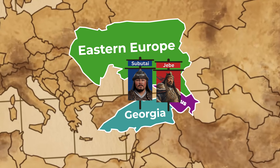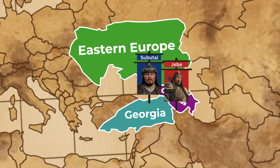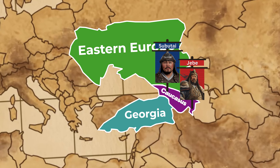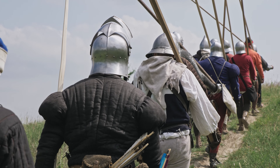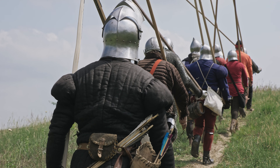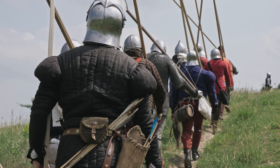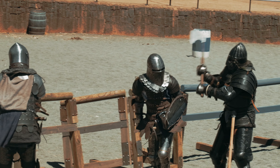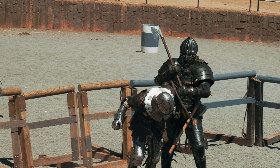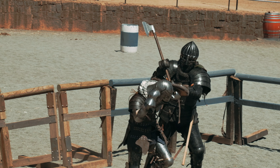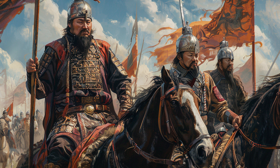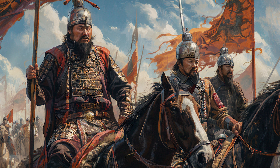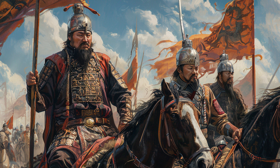Continuing their advance, the Mongols encountered the Alans and the Kipchaks, two prominent nomadic tribes in the Caucasus. Subutai and Jebe forged an alliance with the Kipchaks, temporarily uniting against the Alans. Once the Alans were defeated, the Mongols turned on the Kipchaks and annihilated their forces. This betrayal was a classic example of Mongol diplomatic cunning and strategic ruthlessness.